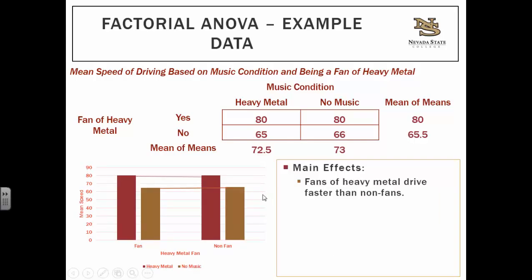In a third example, the mean of means for fan status are very different — 80 versus 65.5 — so there is a main effect: fans drive faster than non-fans. But the mean of means along the bottom are very similar, so there's no main effect for music type. Within the table, fans show 80 and 80 — no difference — and non-fans show 65 and 66 — also very close. On the graph, the red bar is consistently taller for both fans and non-fans, and drawing lines connecting bars of the same color shows no crossover, confirming there is no interaction effect.